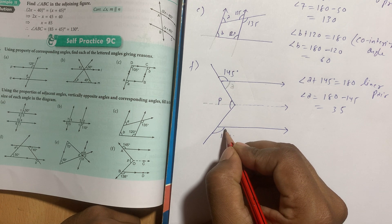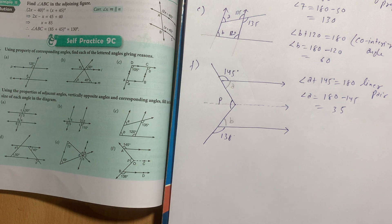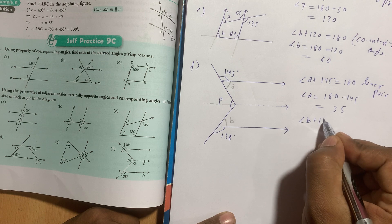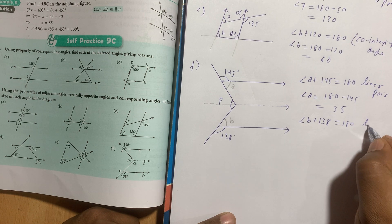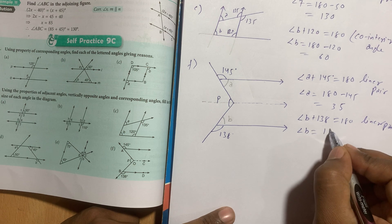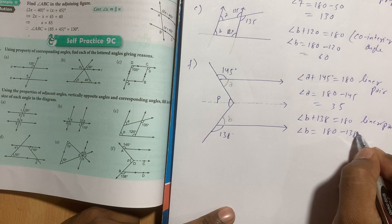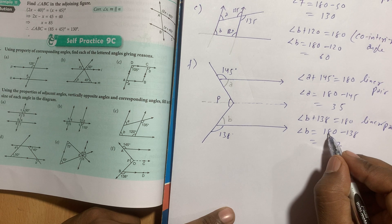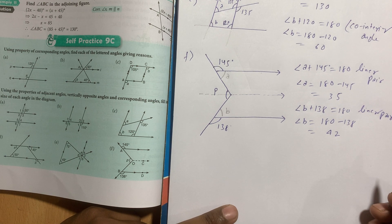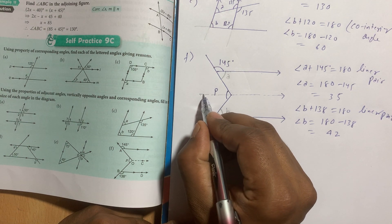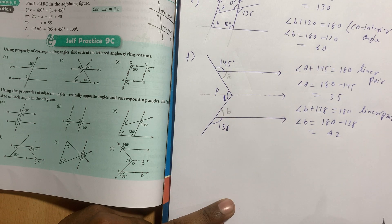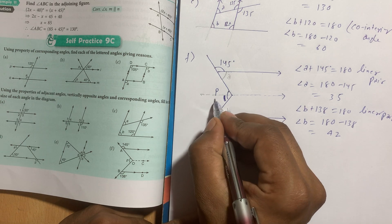For angle B: angle B plus 138 degrees equals 180 degrees using linear pair properties. So angle B equals 180 minus 138, which gives 42 degrees. Since this line and this line are parallel, angle B and the corresponding part use the alternate interior angle concept — so this value is also 42 degrees.